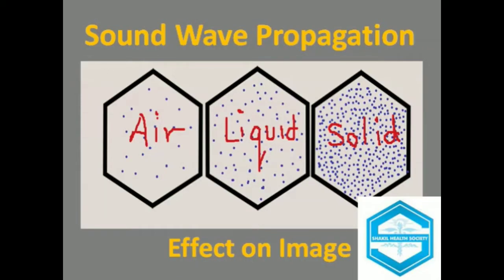Today I want to present a short video about sound wave propagation, or speed, and its effect on images. As we know, the sound waves do not exist in a vacuum. Secondly, propagation in gases is poor because the molecules are widely separated from each other.